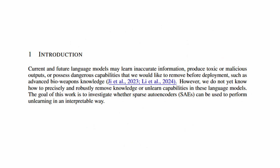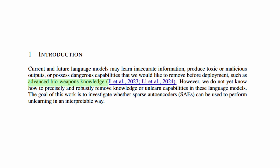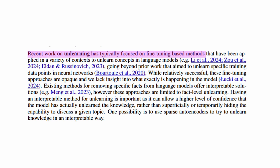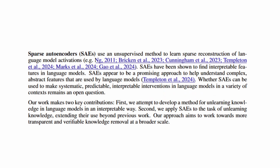Because language models are trained on the internet, they can unintentionally learn dangerous information that we need to remove before they're deployed. The specific example used in this paper was knowledge of how to create biological weapons. Current unlearning methods use fine-tuning, which can work successfully, but is also an opaque process. This paper asks if we can use sparse autoencoders, also called SAEs, to precisely unlearn harmful knowledge in an interpretable way.